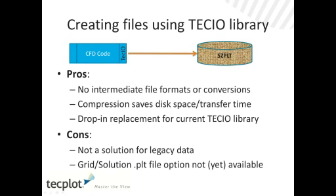The advantages of using the TechIO library are: no intermediate file formats or conversions needed — you get your SC PLT data directly. The compression for unstructured data will save disk space. On various tests, we've seen anywhere from 30% to 60% compression — averaging about 40% — so it can be really substantial.